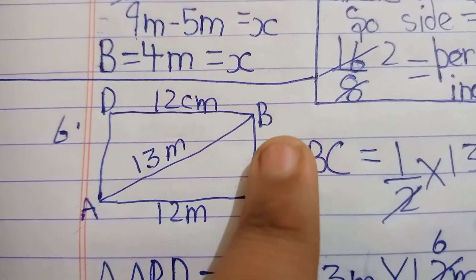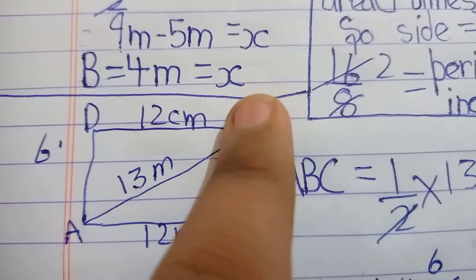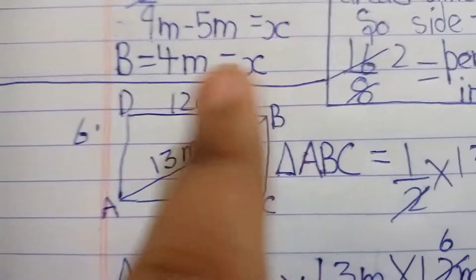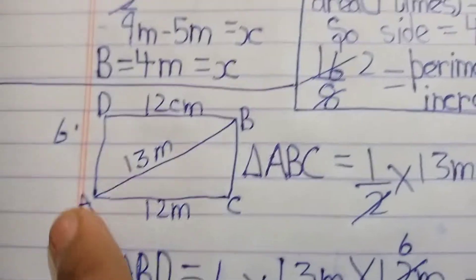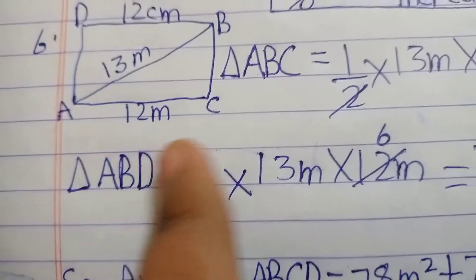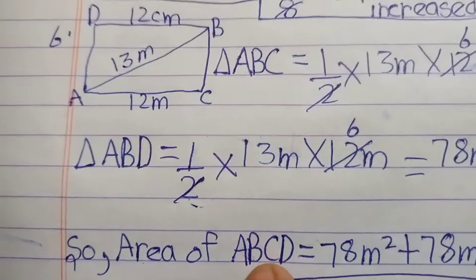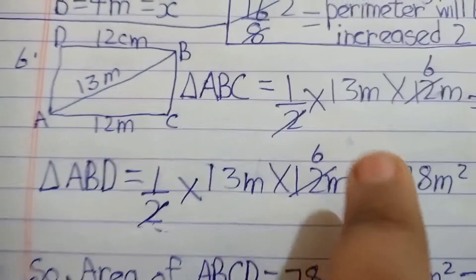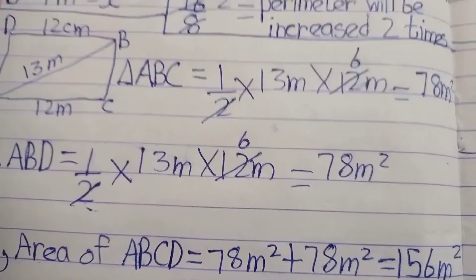Using the right triangle formed by the diagonal, we apply the Pythagorean theorem to find the other side. The area of triangle ABD is 1 over 2 multiplied by 13 multiplied by 12, which is 78 meters square. The full rectangle ABCD has area equal to 78 plus 78 meters square, which is 156 meters square.